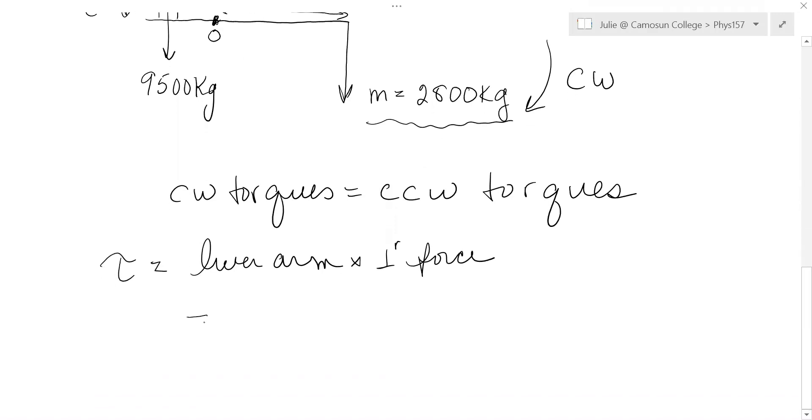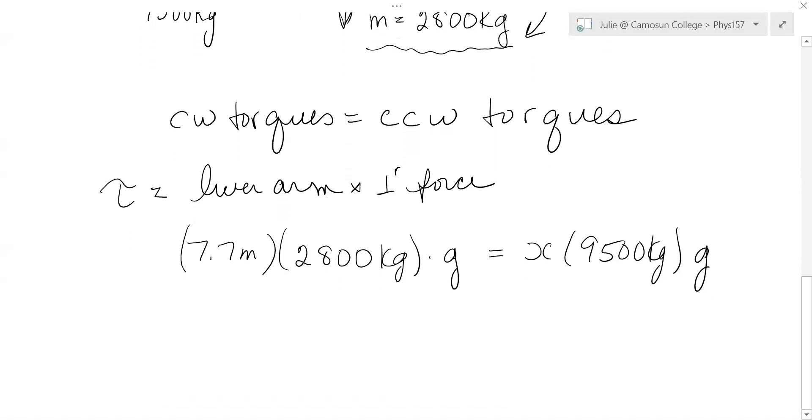So lever arm 7.7 meters times perpendicular force 2800 kilograms times g for a force. And that would have to equal x. We don't know what the lever arm is times the 9500 kilogram counterweight times g. Now notice how you don't need to worry about what the actual force is because g is going to cancel here. And the distance you have to put the counterweight is just 7.7 times 2800 divided by 9500.